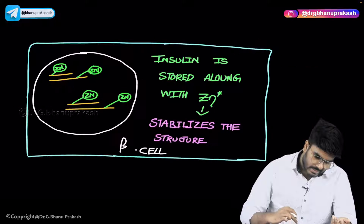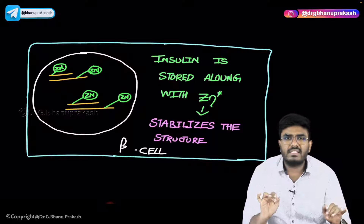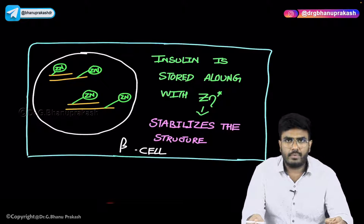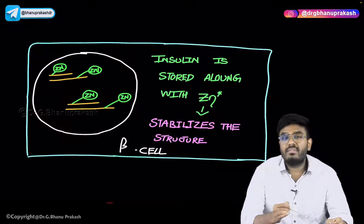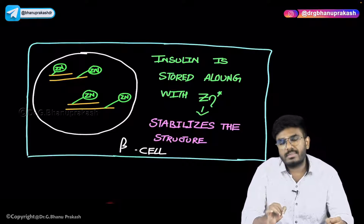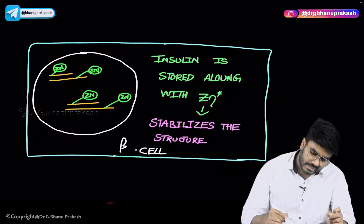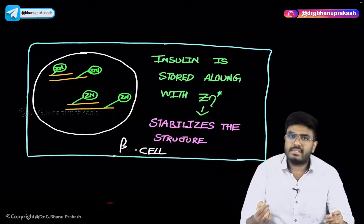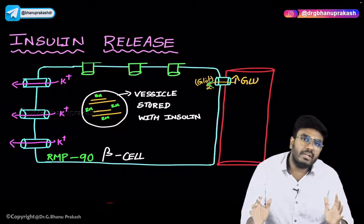Now let's discuss how insulin is stored inside a beta cell. Inside the beta cell, there are vesicles containing insulin. These insulin molecules are stored in the vesicles along with zinc ions. Zinc stabilizes the structure of insulin and prevents its disintegration.